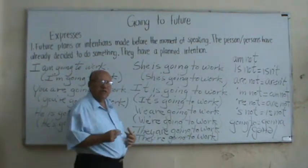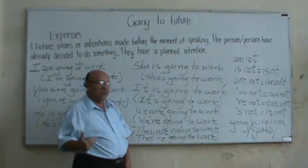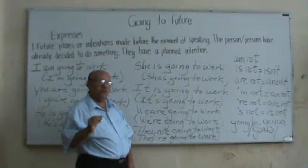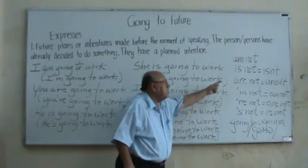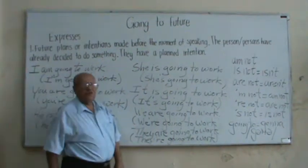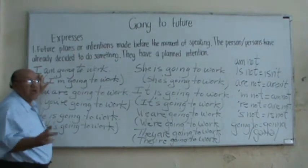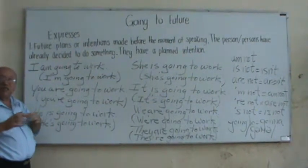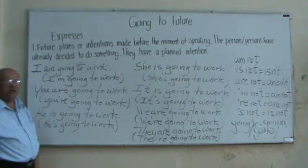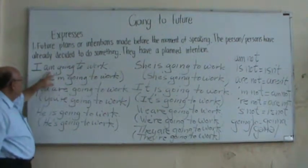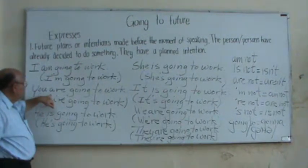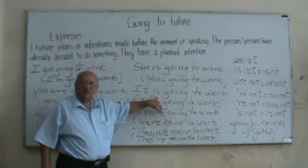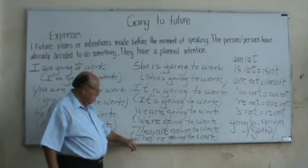For the interrogative negative, we put the contraction before the subject using 'isn't' or 'aren't.' In the case of 'I,' we use a formal form — putting 'not' after the subject: Am I not going to work? Are you not going to work? Is he not going to work? Is she not going to work? Are we not going to work? Are they not going to work? With contractions: Aren't you going to work? Isn't he going to work? Isn't she going to work? Isn't it going to work? Aren't we going to work? Aren't they going to work?